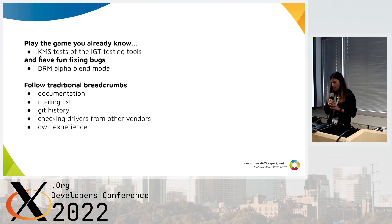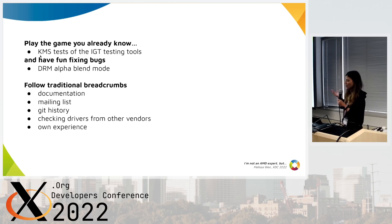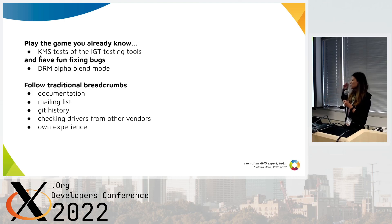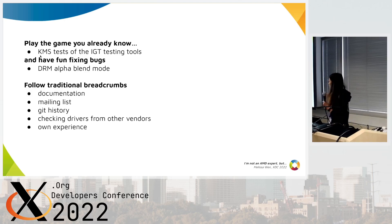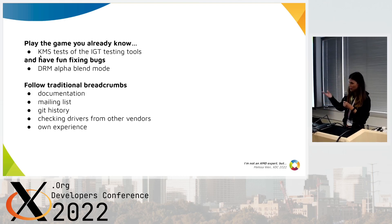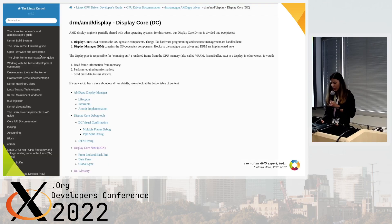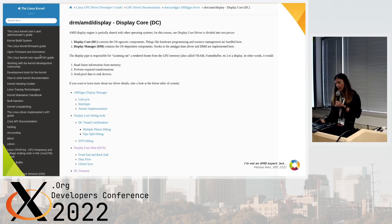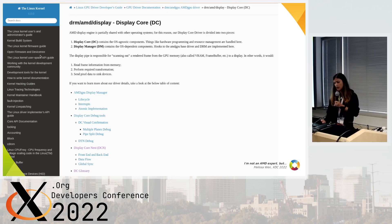I checked all results of the IGT test and then selected something where I had some background knowledge. I strongly suggest you follow traditional breadcrumbs: check documentation, mailing lists, git history, and drivers from other vendors. We do that all the time. And so I started from the usual path of looking at documentation.